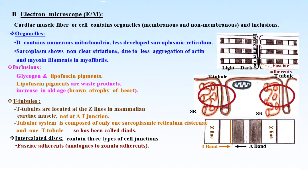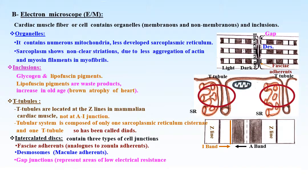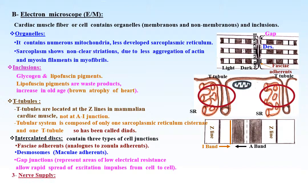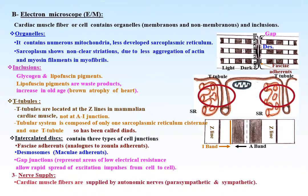Intercalated discs contain three types of cell junctions: fascia adherens, analogous to zonula adherens; desmosomes or macula adherens; and gap junctions, which represent areas of low electrical resistance.